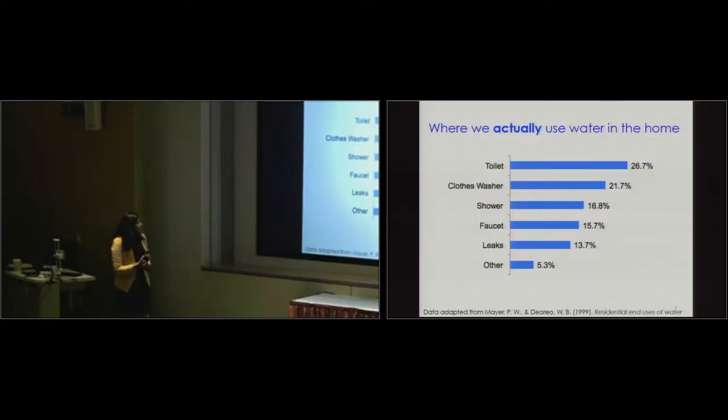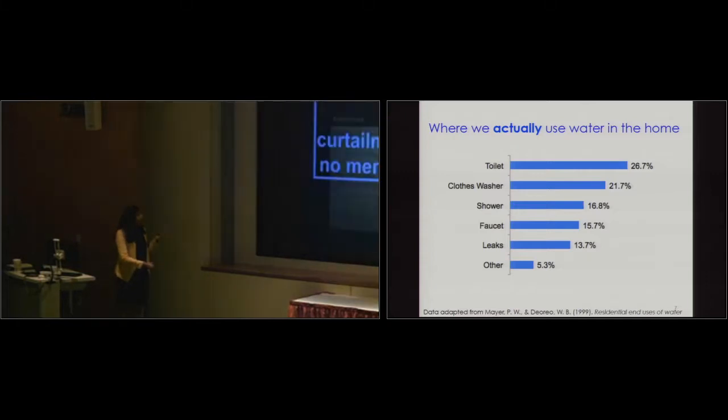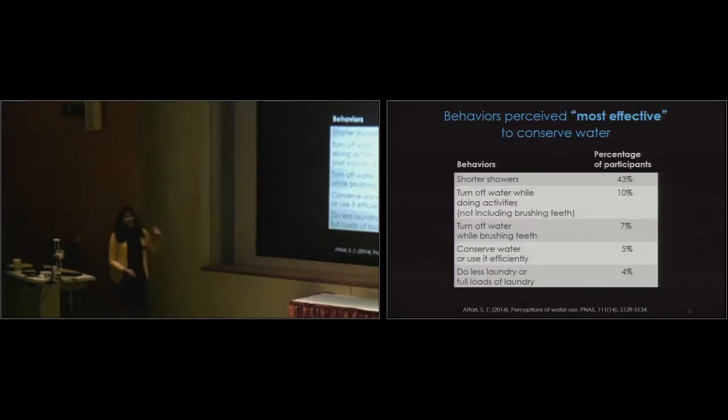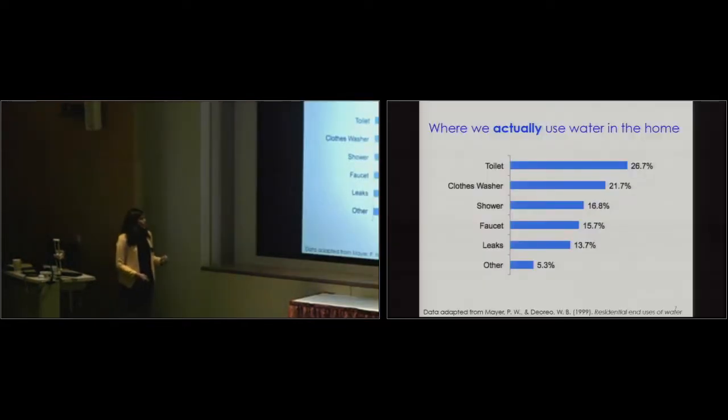So this is data from Peter Mayer and Bill Diorio in 1999. And this is actually where the EPA is still using their data for residential end uses of water. So what they found, and this was also a sample of convenience, the top water user in the home, inside the home, are your toilets, followed by clothes washers, showers, faucets, leaks and others. So what you notice from the previous data is toilets doesn't even make the top 70% of the participants don't even mention toilets. So that's like our first surprise finding.